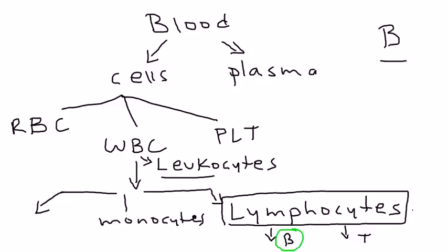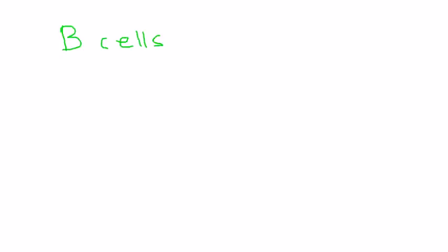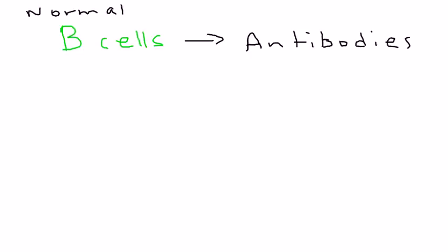What happens is this B lymphocyte transforms into an abnormal type of cell, and that is really the key to detecting this cancer. Normal B cells in the body are very important because they produce antibodies, which, as most of you probably know, are very important in fighting infection. They fight infection and are essentially part of our immune system.